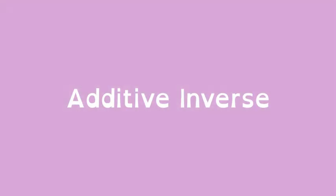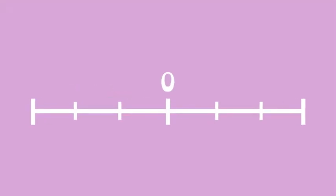Math Shorts: Additive Inverse. It means a number that is the same distance from zero on the number line, but in the opposite direction.